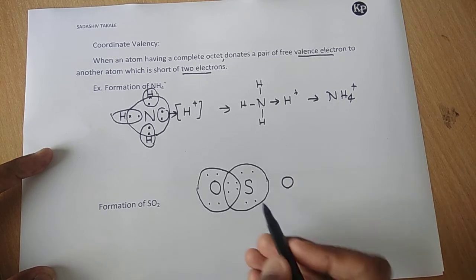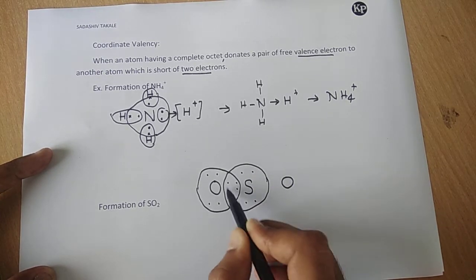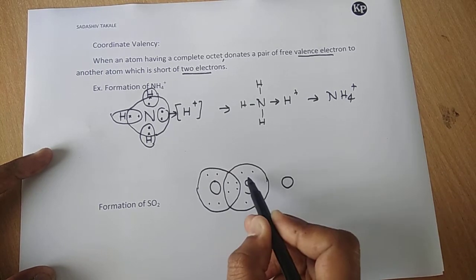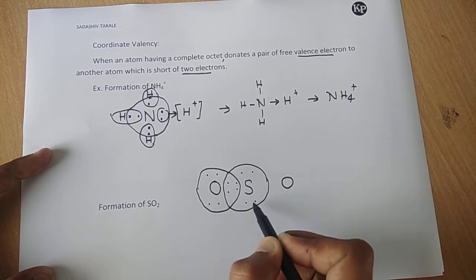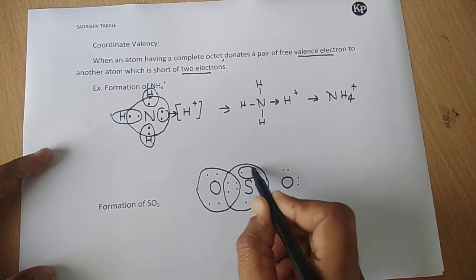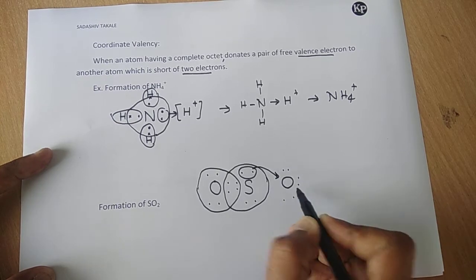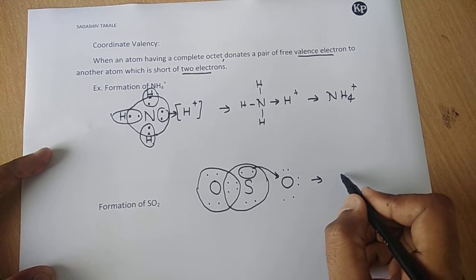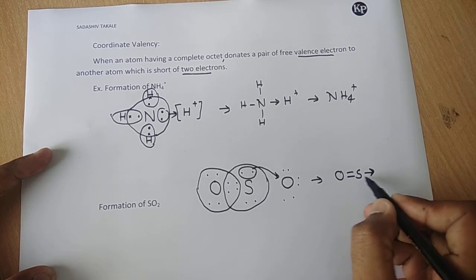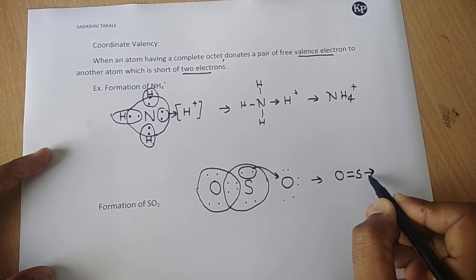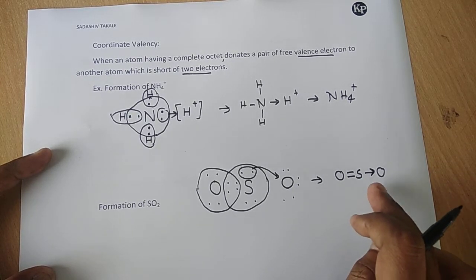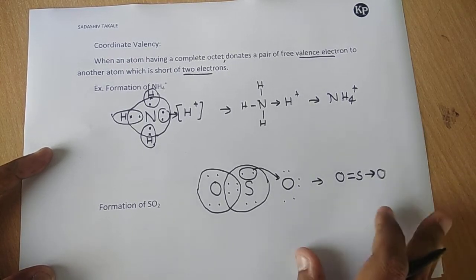Sulfur has already completed its octet — four, five, six, seven, eight — octet is complete. So there are two pairs of electrons available — one pair, two pairs. Oxygen needs two electrons, so this lone pair of electrons will be donated to oxygen. So oxygen gets a double bond with sulfur via one lone pair donation. Sulfur donates one lone pair to oxygen, so this type of bond is called a coordinate bond.